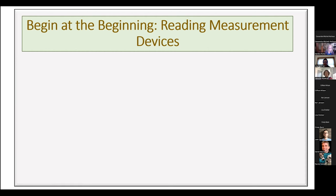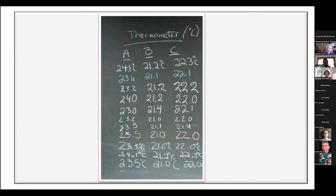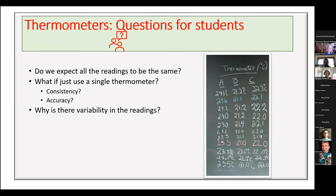This first activity has students simply reading the value of measuring devices. There are three thermometers (A, B, and C) placed in a beaker of water equilibrated to room temperature, objects to measure with a ruler, and volumes to read from graduated cylinders with food coloring added for easier reading. Students put data on the board and discuss: Do we expect the readings to be the same? Would using a single thermometer be more consistent or accurate? Why is there variability?